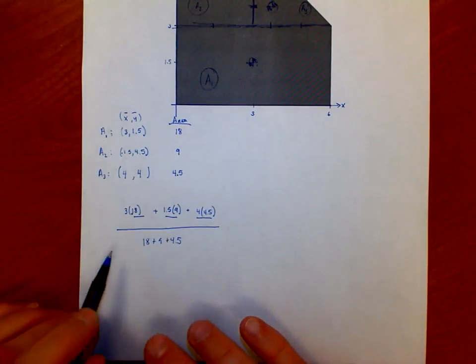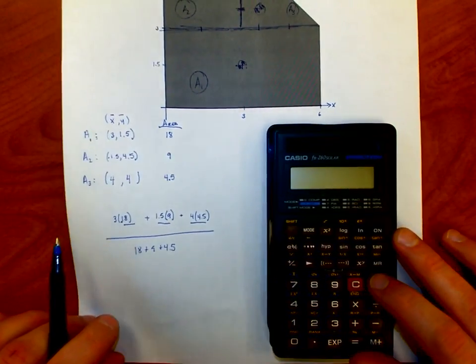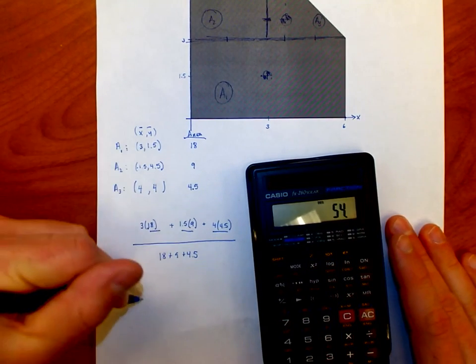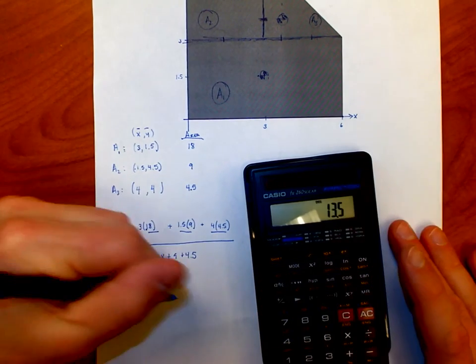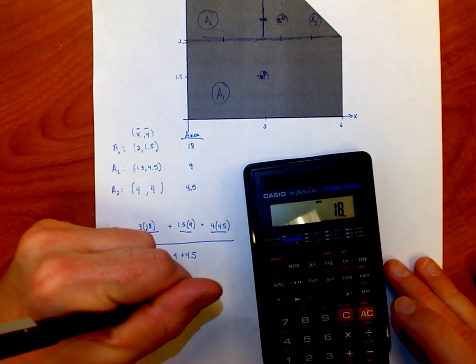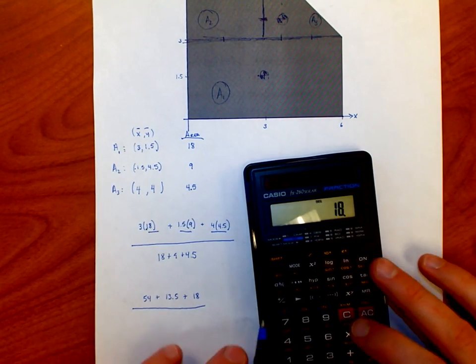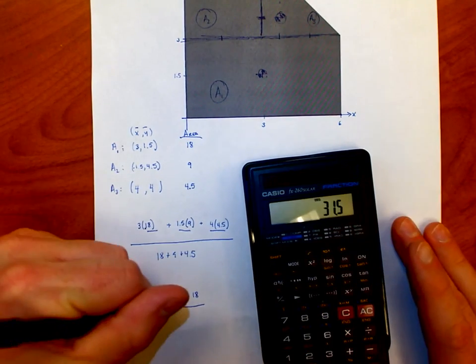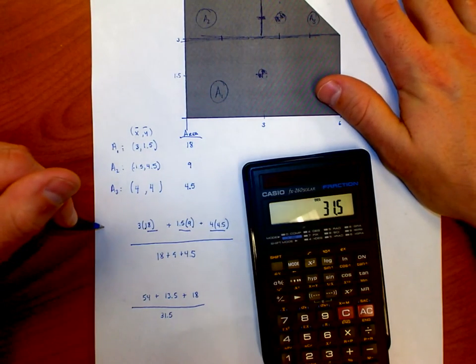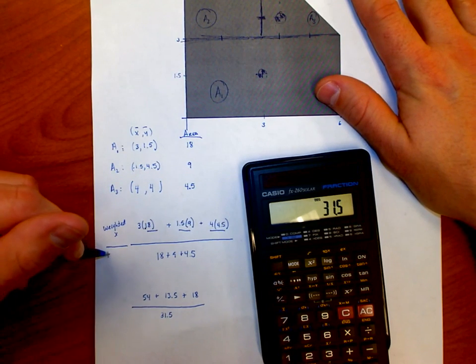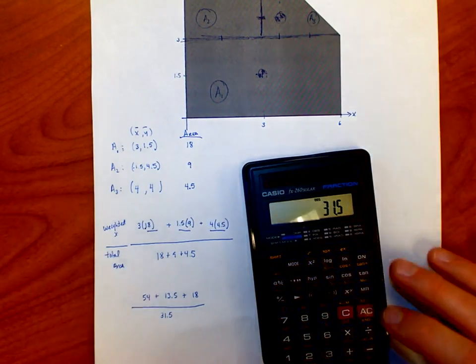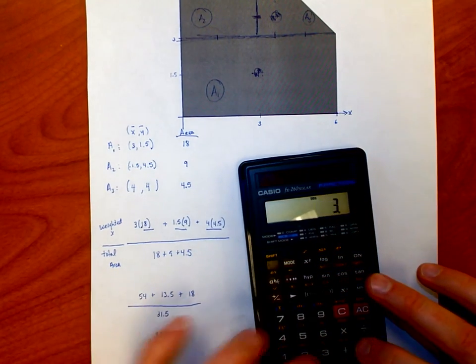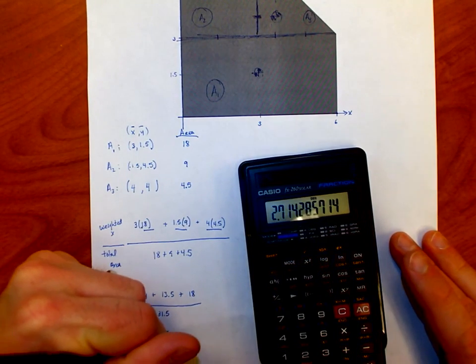If I divide by the total area, then that gives me the X coordinate that I'm looking for. So what is three times 18? Three times 18 is 54. 1.5 times 9 is 13.5. And 4 times 4.5 is 18. I'm going to add the three weighted values up. I'm going to divide by the total area, 18 plus 9 plus 4.5. The total area of the shape is 31.5. 54 plus 13.5 plus 18 adds up to 85.5. I'm going to divide that by 31.5, and that gives me an average X coordinate of 2.71.